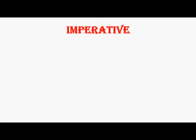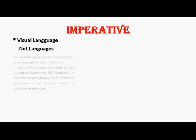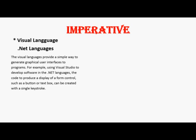A subcategory of an imperative language is visual language. The most popular visual languages are the .NET languages. Their implementations include capabilities for drag-and-drop generation of code segments. Such languages were once called fourth generation languages, although that name has fallen out of use. The visual languages provide a simple way to generate graphical user interfaces.